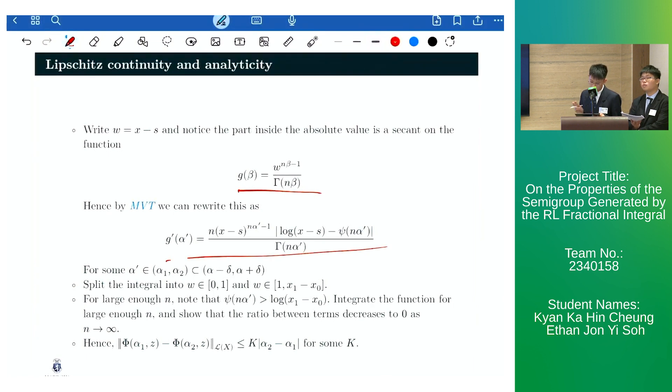We can then split the integral into two parts and integrate them for a large enough n and then show that the ratio between the terms decreases to zero as n approaches infinity. Thus, we have the desired result.